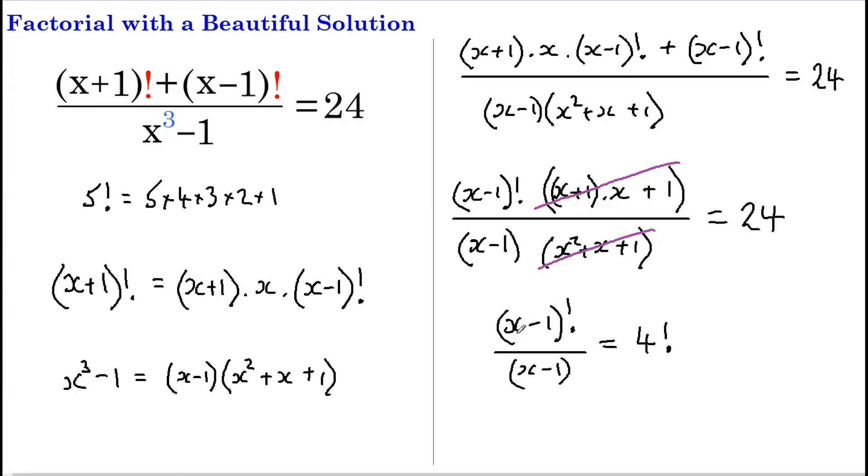And finally, we know that (x-1) factorial is the same as (x-1) multiplied by (x-2) multiplied by (x-3), etc., all the way down to 1.